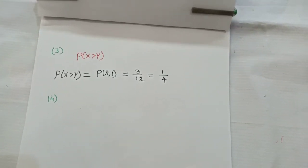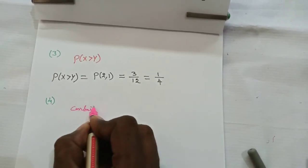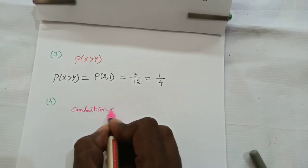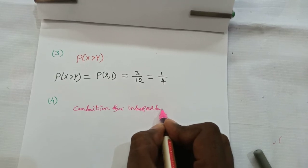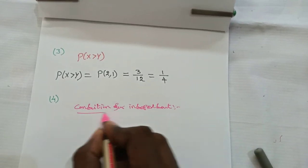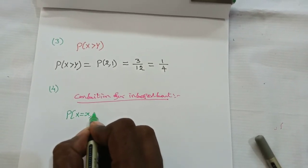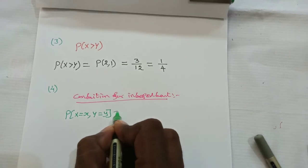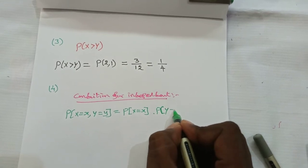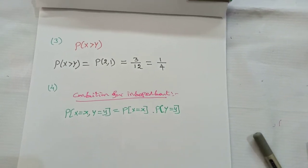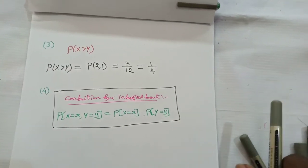For the fourth question: are X and Y independent? The condition for independence is that p(X=x, Y=y) = p(X=x) · p(Y=y) must be satisfied for each and every term in the table.